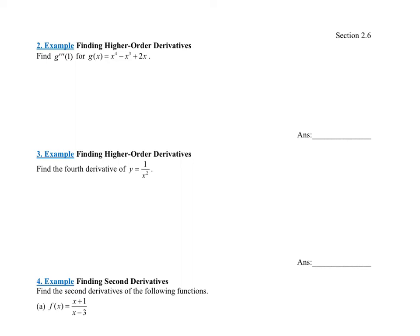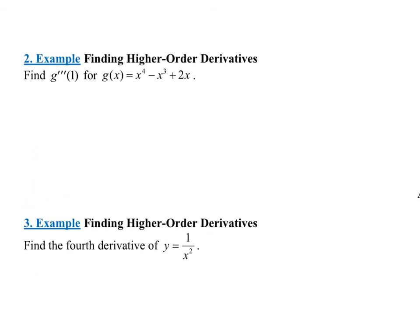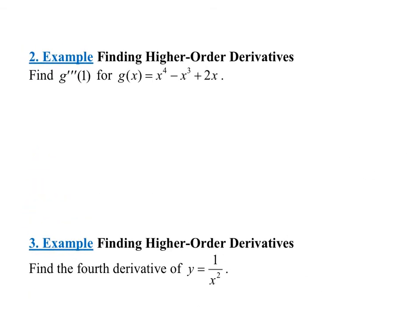Let's move on to example two. It says finding higher order derivatives: find g triple prime of one. So what that means is find the third derivative and then plug in one, for g of x equal x to the fourth minus x cubed plus 2x.